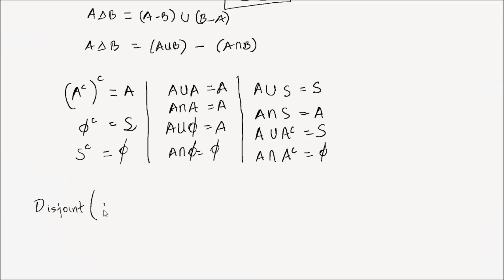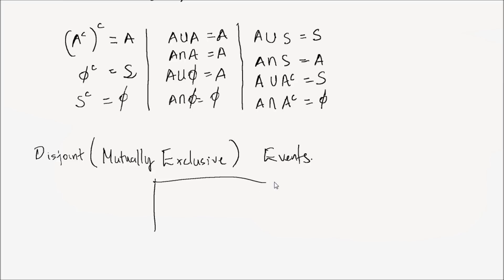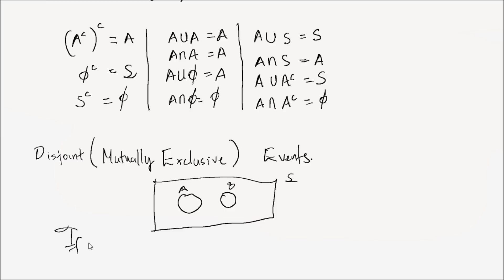Now we will look at disjoint or mutually exclusive events. In a Venn diagram, events A and B are shown with no overlap — they do not have any intersection. So we say events A and B are mutually exclusive or disjoint. Therefore, if A intersection B is the empty set, then A and B are disjoint.